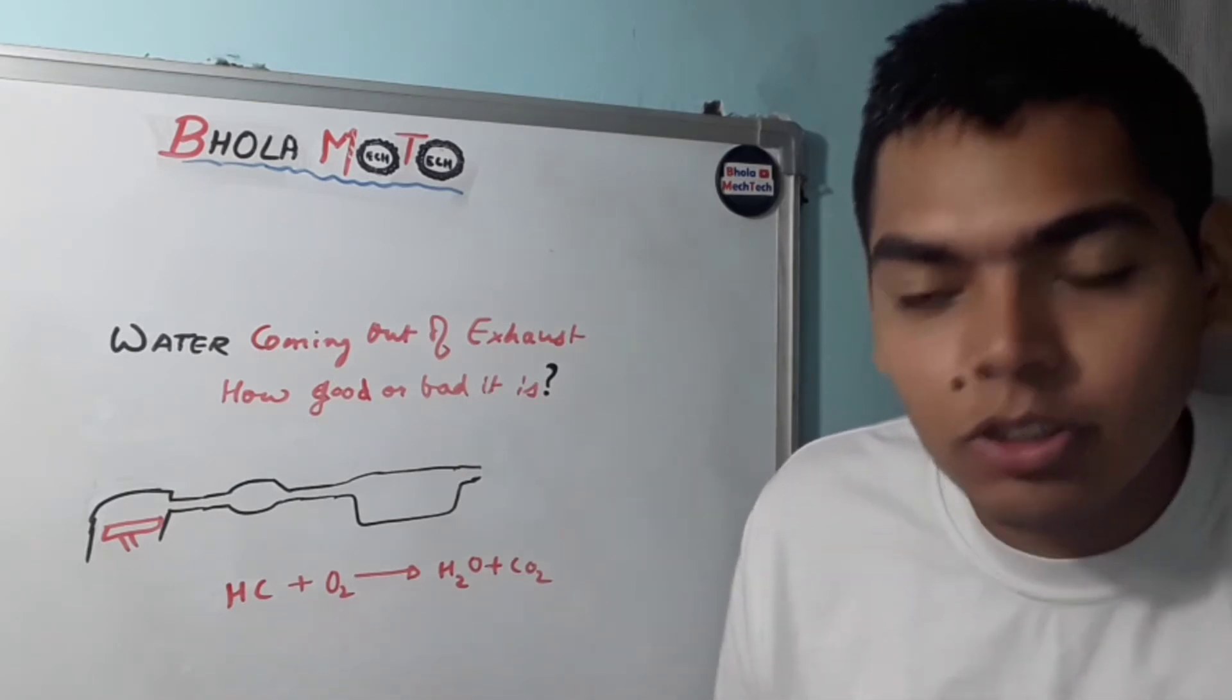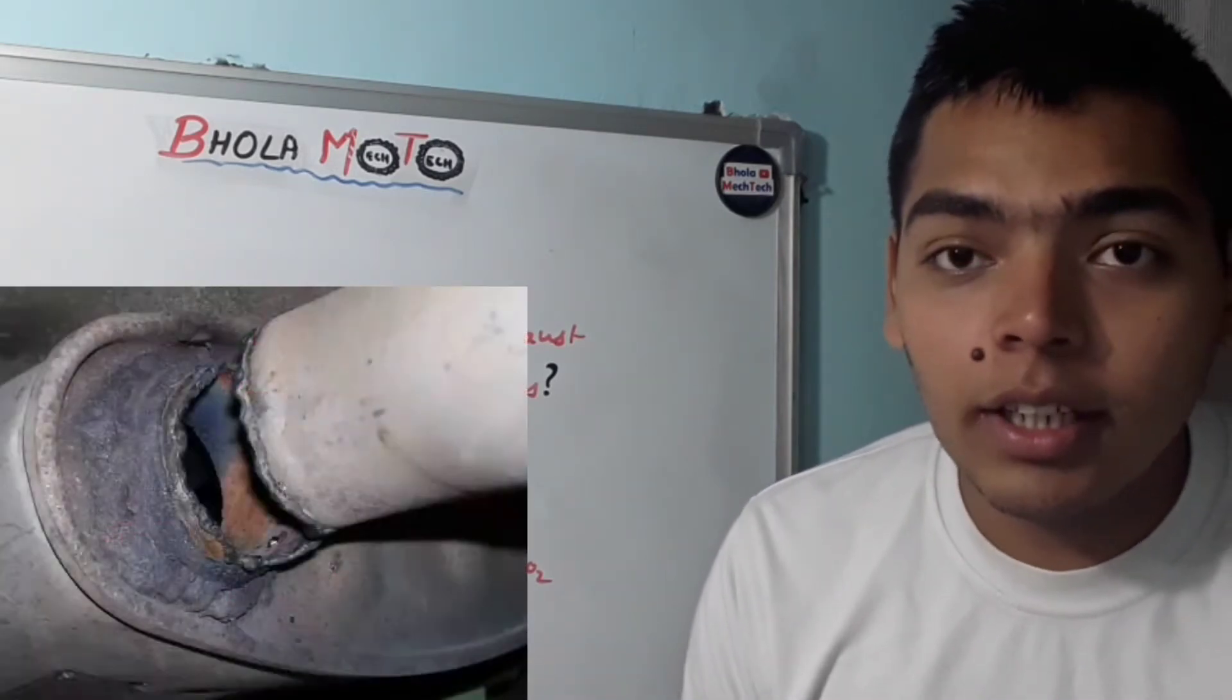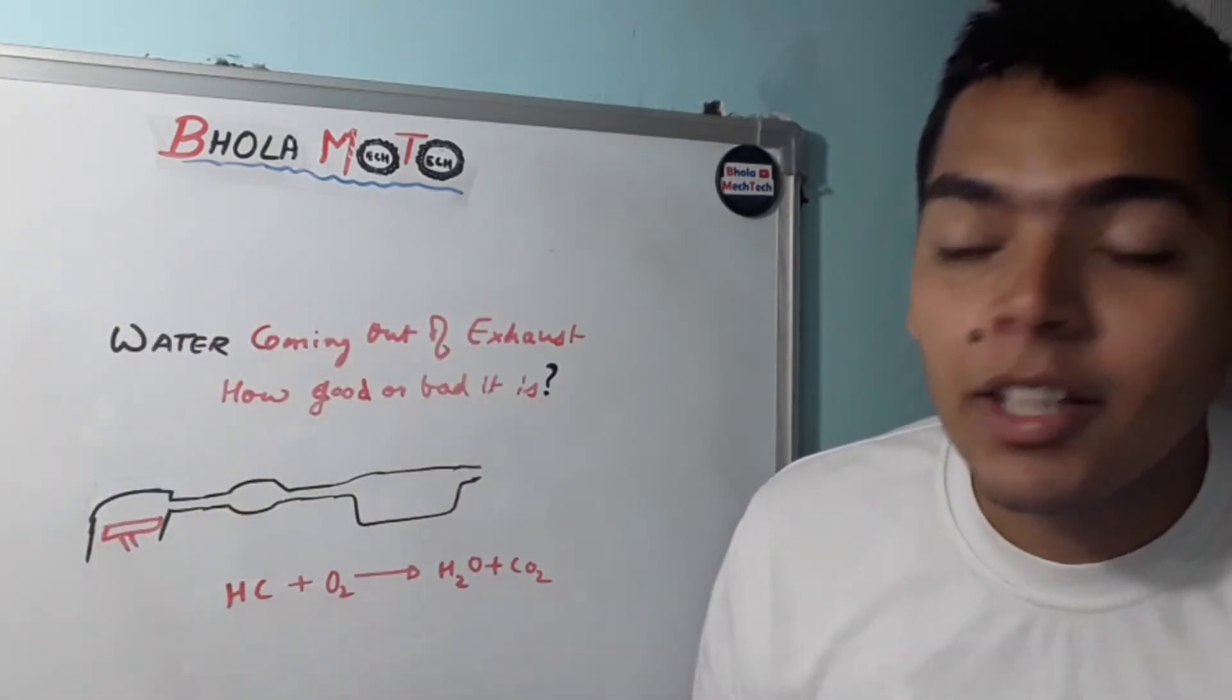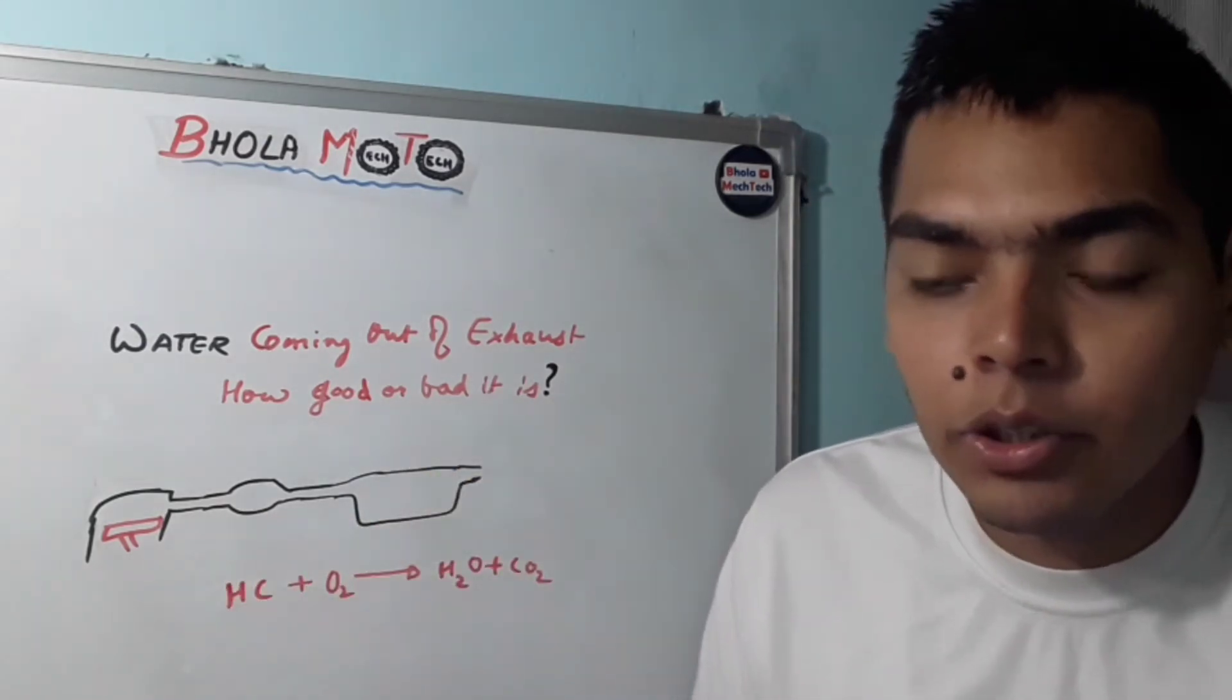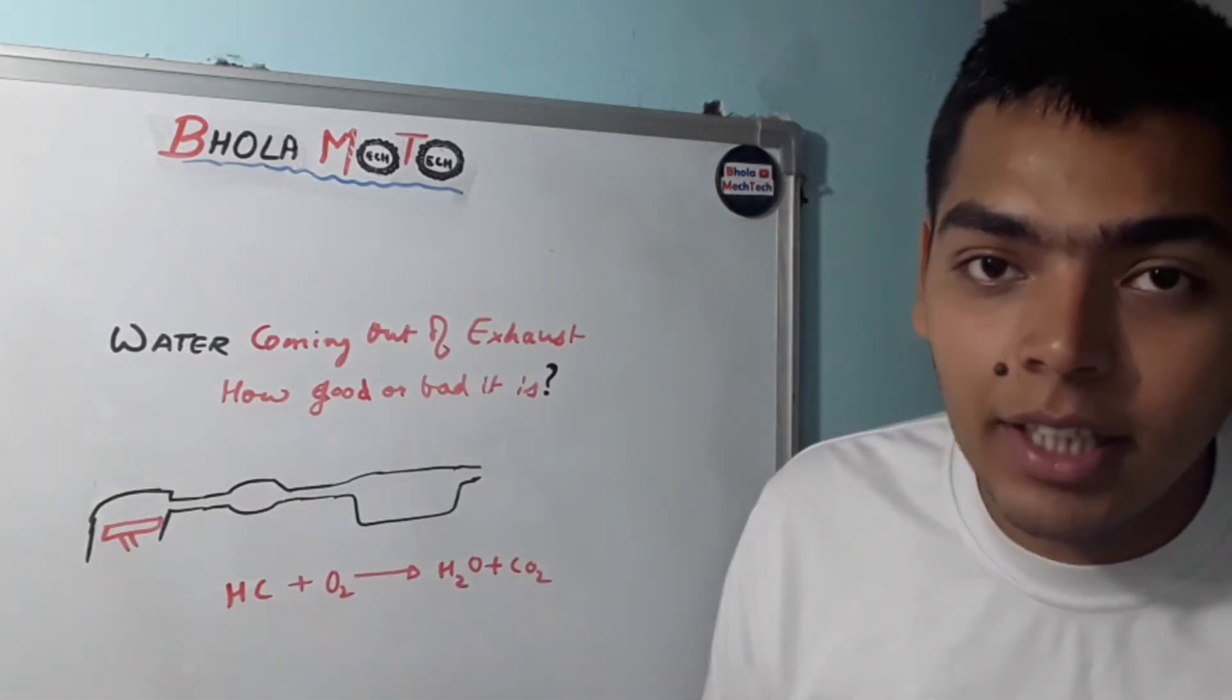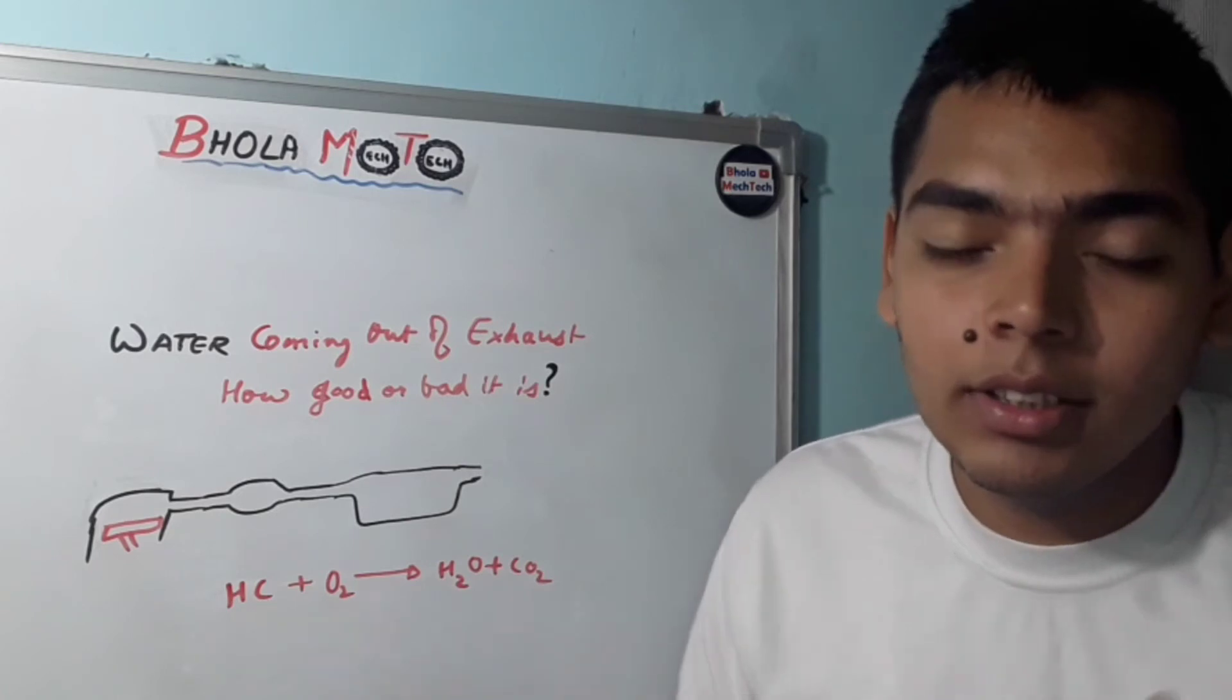But if the fuel is not combusting properly, then the fuel will be coming out unburnt and hence not making any H2O or CO2. There is one bad impact also - wherever water is, it starts producing rust. So in this exhaust path, it may produce rust, and due to that rusting, your exhaust manifold or muffler may get rusted and corroded after some time.